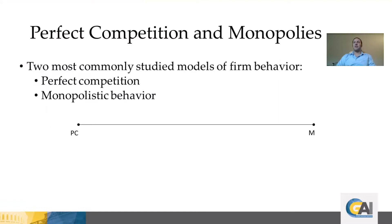One of the most important reasons for why we look at these two cases is that they study how firms behave when they find themselves at the two opposite ends of a spectrum of possible markets. In the perfect competition case, we have a firm who has essentially zero control over anything that happens in the market, and in a monopoly case, we have a single firm who controls all the production decisions in the market.